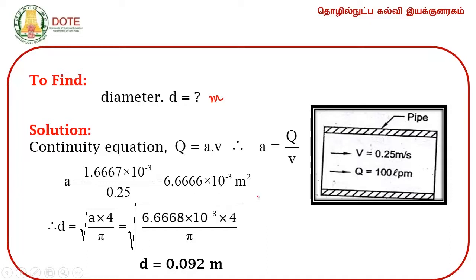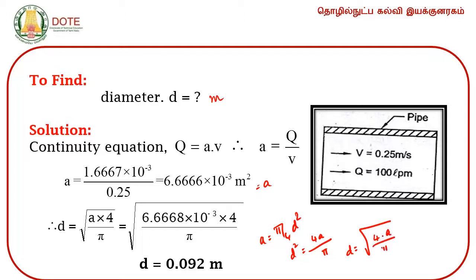Since area A = (π/4) × d², we get d² = 4A ÷ π. Therefore d = √(4 × 6.666 × 10⁻³ ÷ π) = 92 millimeters. This is the diameter of the pipeline.